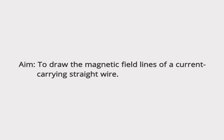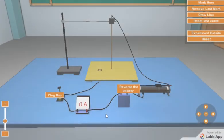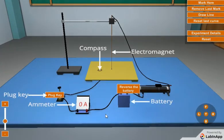Aim: to draw the magnetic field lines of a current-carrying straight wire. The apparatus required for this experiment are shown here.